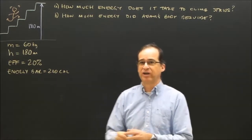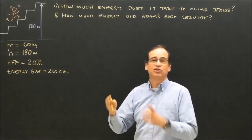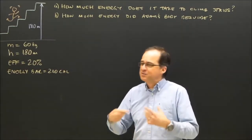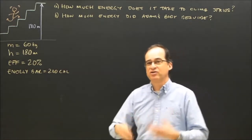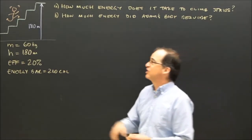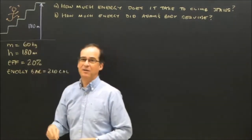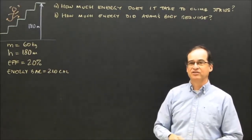That means there's two energies at work here. What we have is Adam climbed up the stairs. That took a certain amount of energy. But his body's not perfectly efficient, so it's going to take more energy in his body. His body's going to burn more energy to get that energy out. So the energy out is represented by what Adam did. And what did Adam do? He climbed up the stairs and gained gravitational energy.